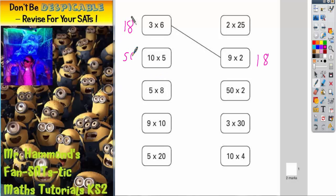So 10 times 5 is 50. 5 times 8 is 40. 9 times 10 is 90. 5 times 20 is 100.